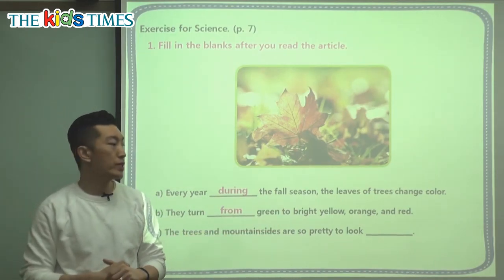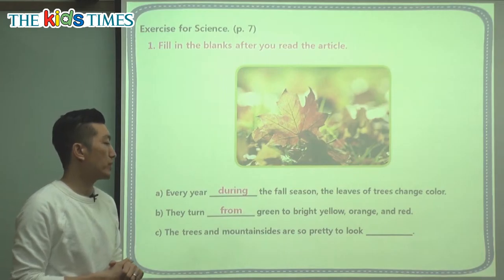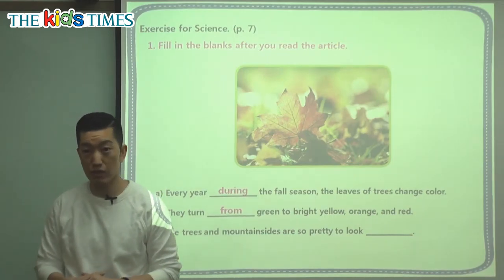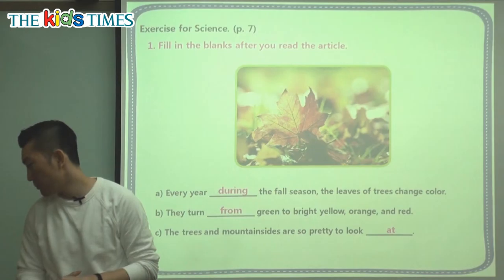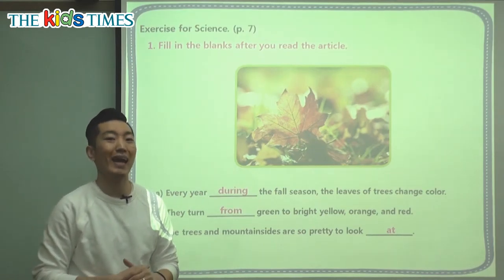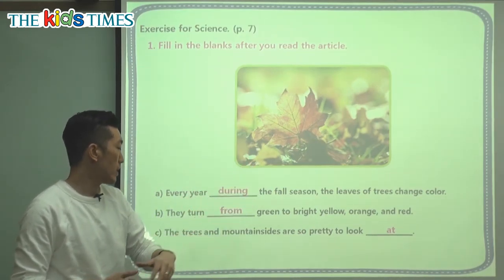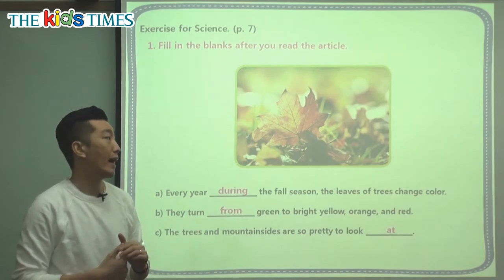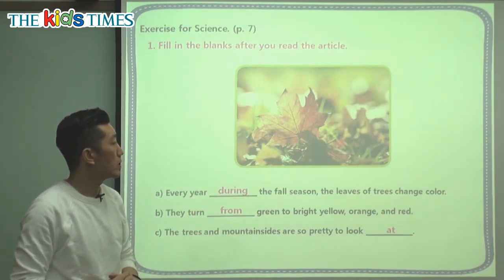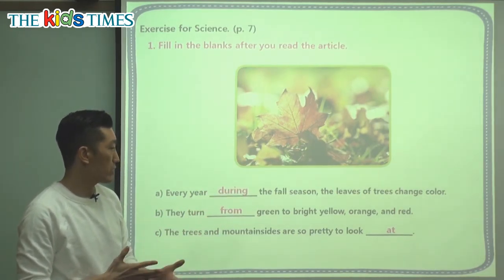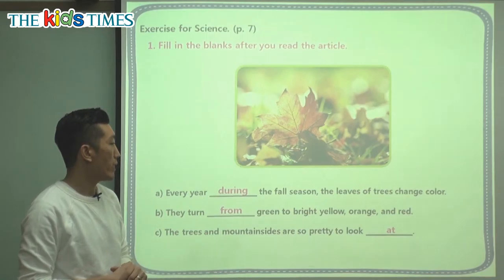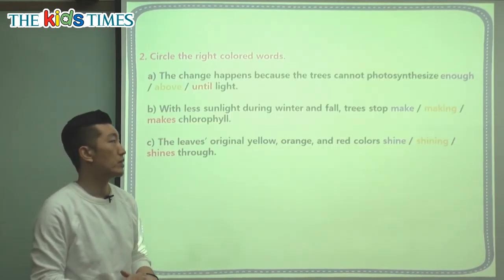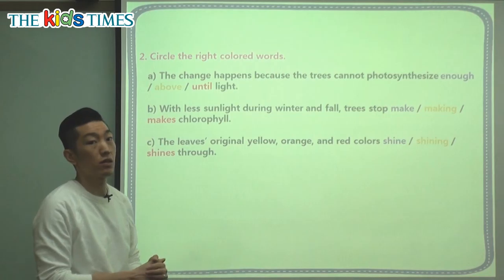The last question: the trees and mountainsides are so pretty to look [blank] — to look up, down, to? What's our preposition? To look at. When we see the trees and look at the mountainsides, they're so pretty to look at. This leaf has already gone through the foliage — the changing of the color — and it's already on the ground because it can't produce any more chlorophyll, just like we learned in our article today.